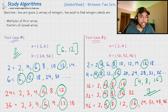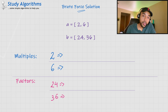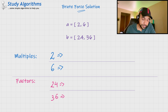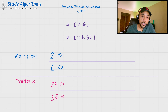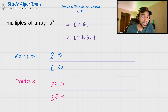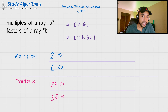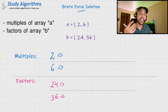Now if this problem statement is clear to you, feel free to try it on your own. However, if you are still facing difficulties, let us dive into the solution. A good programmer always tries to come up with a brute force solution first — you can always optimize the code later on. You are given two arrays and you need to find those integers that satisfy two conditions: they should be multiples of the first array and factors of the second array. Intuitively, you can find all of the multiples of the first array and all of the factors of the second array, and then all the common values would be the answer.